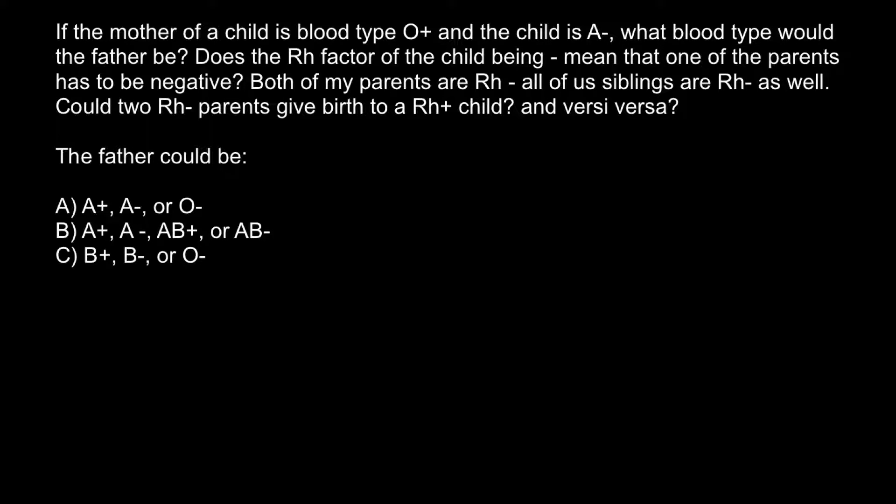Hello and welcome to Nikolai's genetics lessons. Today I got a question about the ABO blood group system, Rh positive and negative factor. I prepared a problem for you. Here's the problem: if the mother of the child is blood type O positive and the child is A negative, what blood type would the father be?